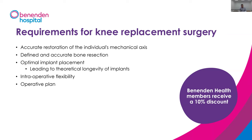Rotating hinge replacements are very rarely used here at Benenden — only for severe bone loss or very unstable knees due to severe deformity or ligament damage. The surgical requirements of a good knee replacement are: curing the patient's pain, making the knee straight by restoring the individual's mechanical axis, taking as little bone as possible to preserve it for future surgery, and placing the implants as accurately as possible in good alignment. This helps prevent early wear, loosening, and subsequent failure.